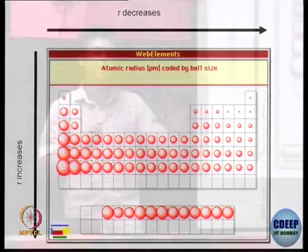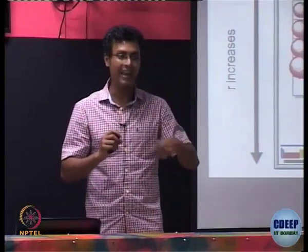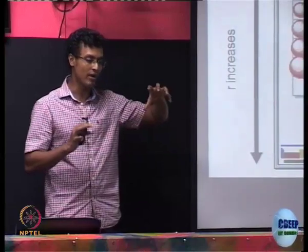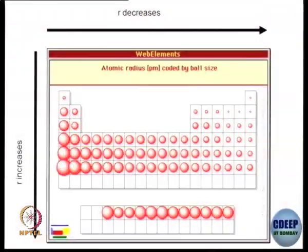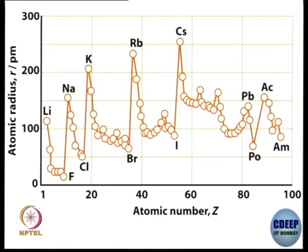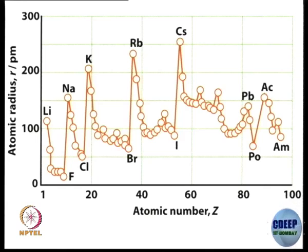Effective nuclear charge remains almost constant while the principal shell is increasing, so size is going to increase from top to bottom. From left to right, it is the same principal shell, and the penetration or neutralization of positive charge by these electrons is not that much, so effective nuclear charge increases and size decreases. The atomic radius plot confirms: from left to right size decreases, and from lithium to sodium to potassium to rubidium to cesium, size increases dramatically.